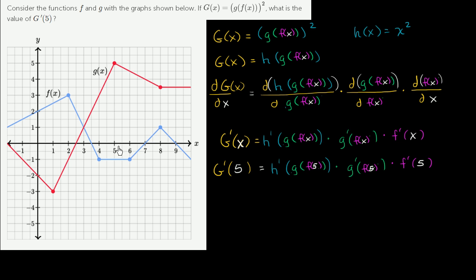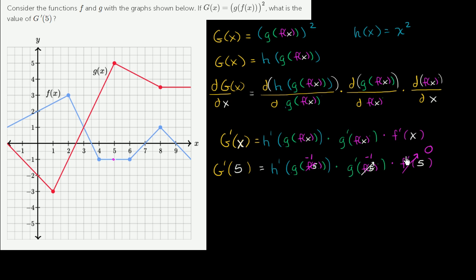What is f of 5? f of 5 is equal to negative one, so those inputs simplify to negative one. What is f prime of 5? That's the slope of the tangent line at that point on the graph, and we can see the slope of the tangent line there is zero. So f prime of 5 equals zero. We could keep going — g of negative one is negative one, and g prime of negative one is also negative one — but we don't even need to, because this is a product of three things and one of them is zero.